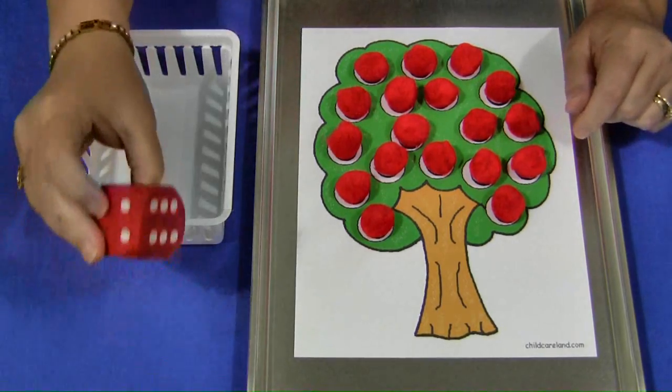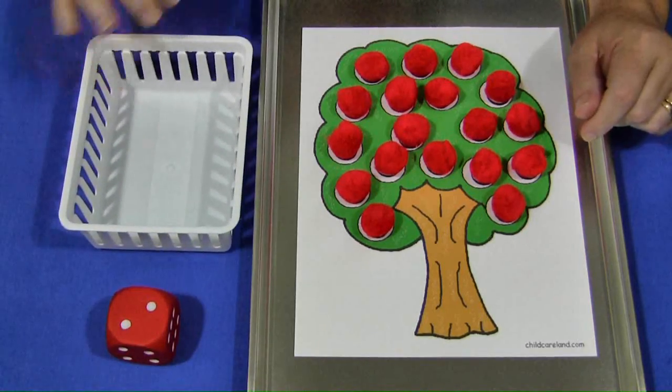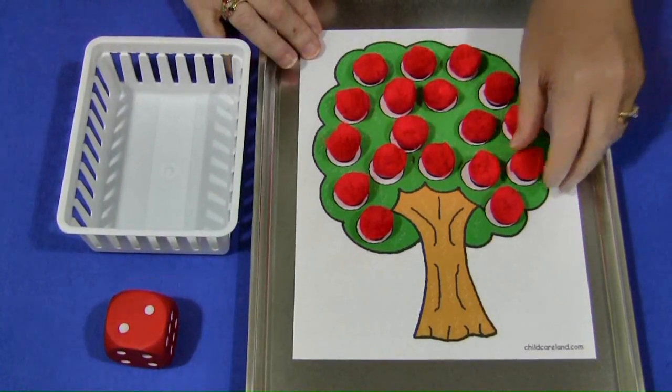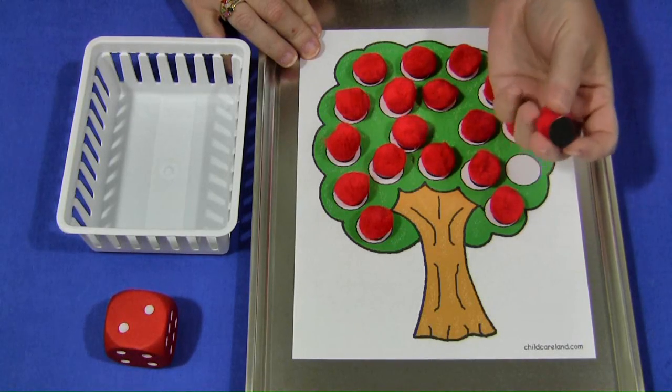You also need to have some form of dice and maybe just a small container or basket. What I've done here is I have red pom-poms and on the bottom of those I have self-adhesive magnets.